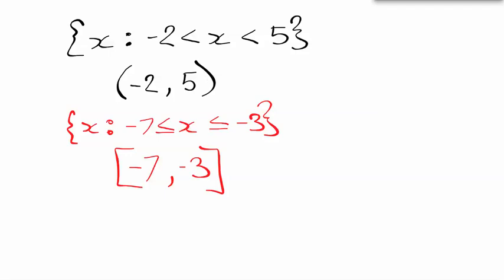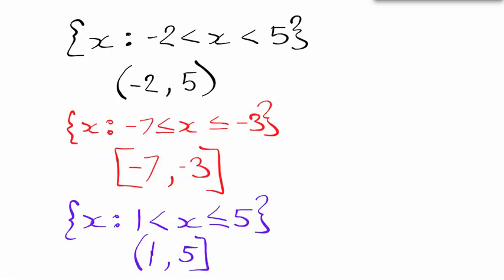Now if I happen to have one that has both mixed together, I've got x where x is greater than 1 but less than or equal to 5. This one, my low number is 1, my high number is 5, but on this side, because I don't have an equal sign on the left, I have a round bracket, and on the right, because I do have an equal sign as part of that inequality, I have a square. So you can mix and match the square and round brackets.